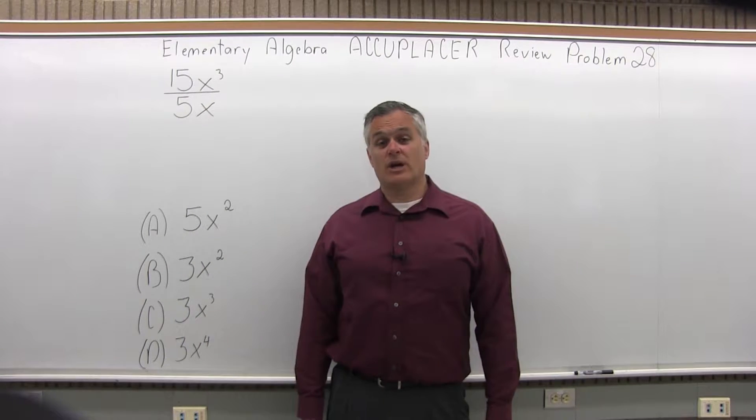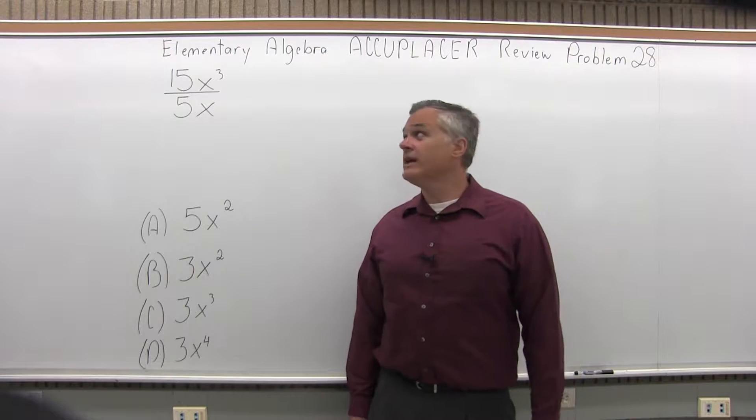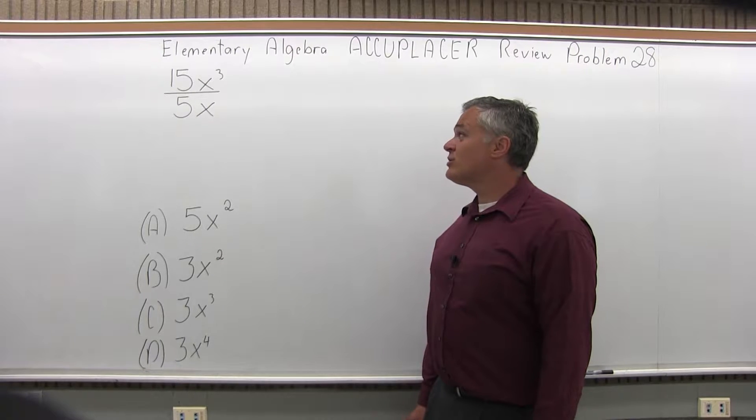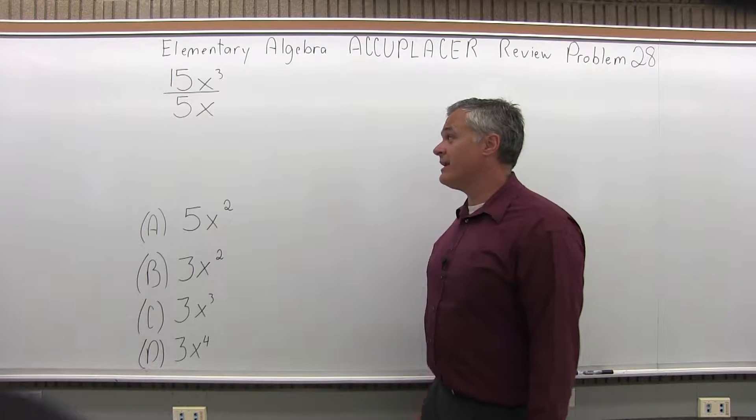This is the Elementary Algebra ACCUPLACER Review, Problem 28. We have 15x to the third over 5x and we want to simplify that.